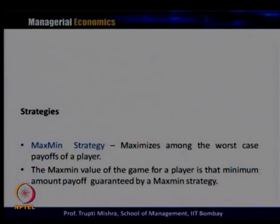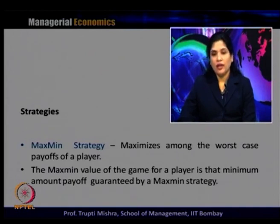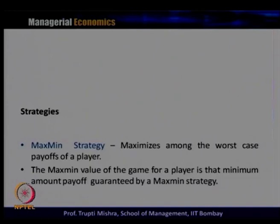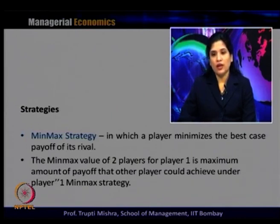Maximin strategy is one which maximizes among the worst-case payoffs of the player. The maximin value for a player is the minimum amount of payoff guaranteed by the maximin strategy — at least that minimum payoff is secured. Minimax strategy is one in which a player minimizes the best-case payoff of its rival. The minimax value for player one is the maximum amount of payoff that the other player could achieve under player one's minimax strategy.